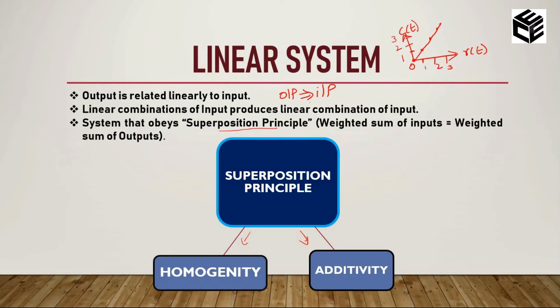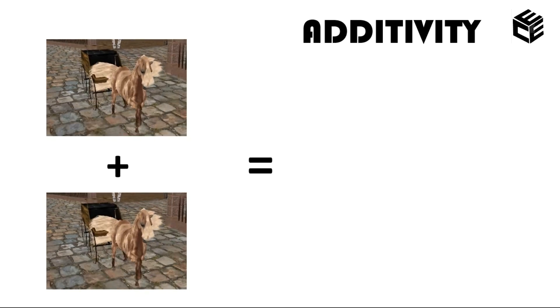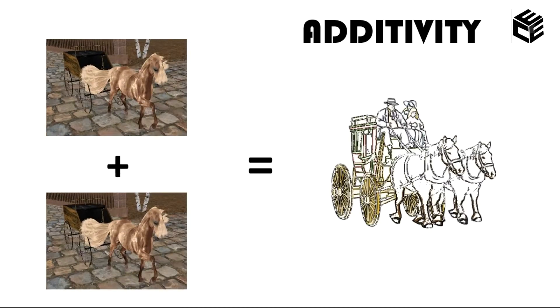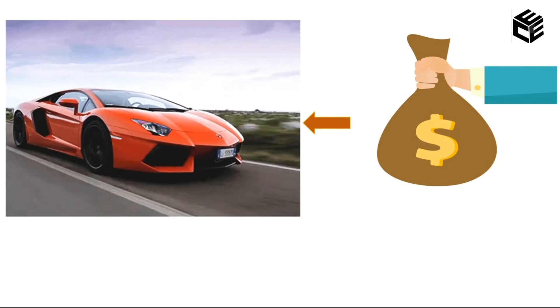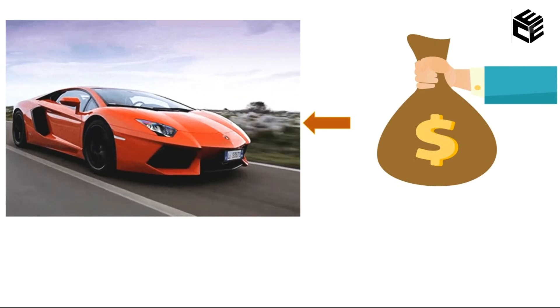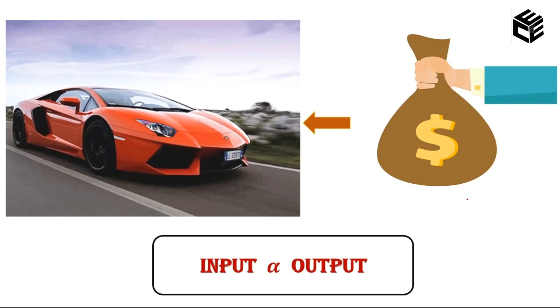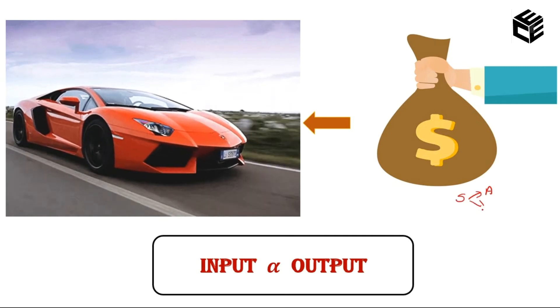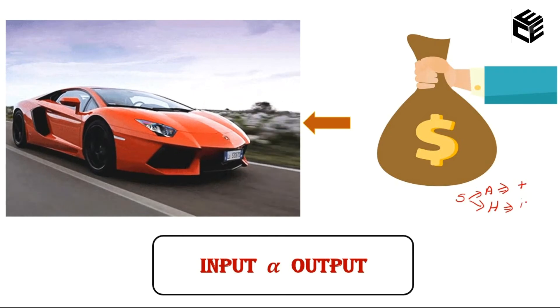Let's look at additivity and homogeneity with examples. For additivity: one horse riding a cart, add one more horse, and we get two horses riding a cart — inputs simply add together. For homogeneity: giving a small amount of money buys a regular car; giving a large amount buys a luxurious car. Whatever input you give, the corresponding output you receive — input is directly proportional to output. Superposition obeys both additivity and homogeneity: additivity simply adds, and homogeneity means input is proportional to output.